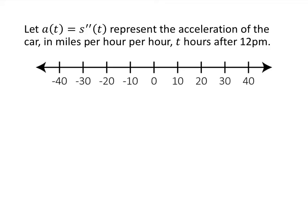Now let's think about the derivative of velocity. We have a of t, which is s double prime of t, which can also be thought of as v prime of t — the derivative of velocity. That's called acceleration. The units are change in y over change in x, so we take the units for velocity — miles per hour — and divide by hours, giving us miles per hour per hour. That's our unit for acceleration, sometimes written miles per hour squared.